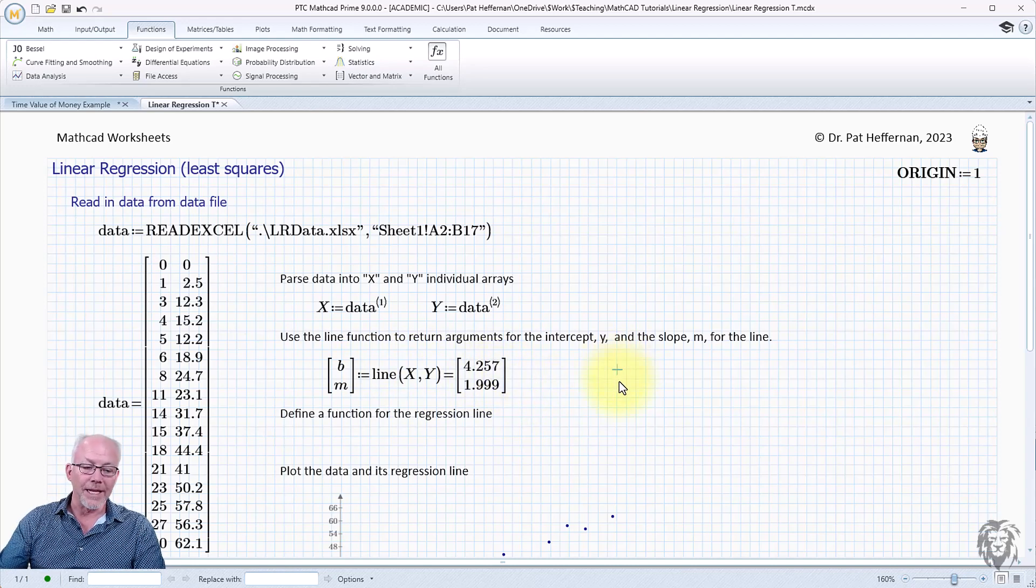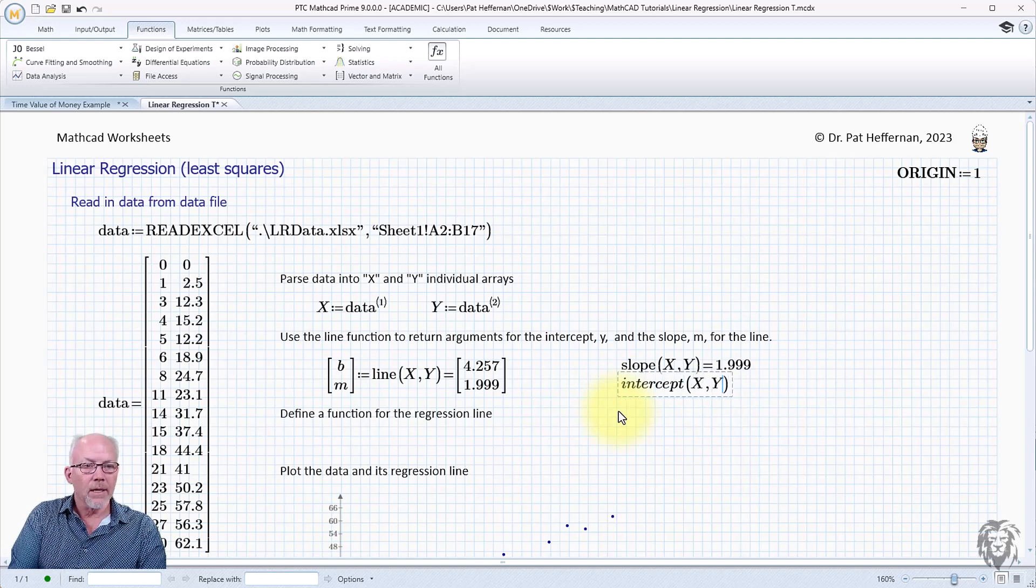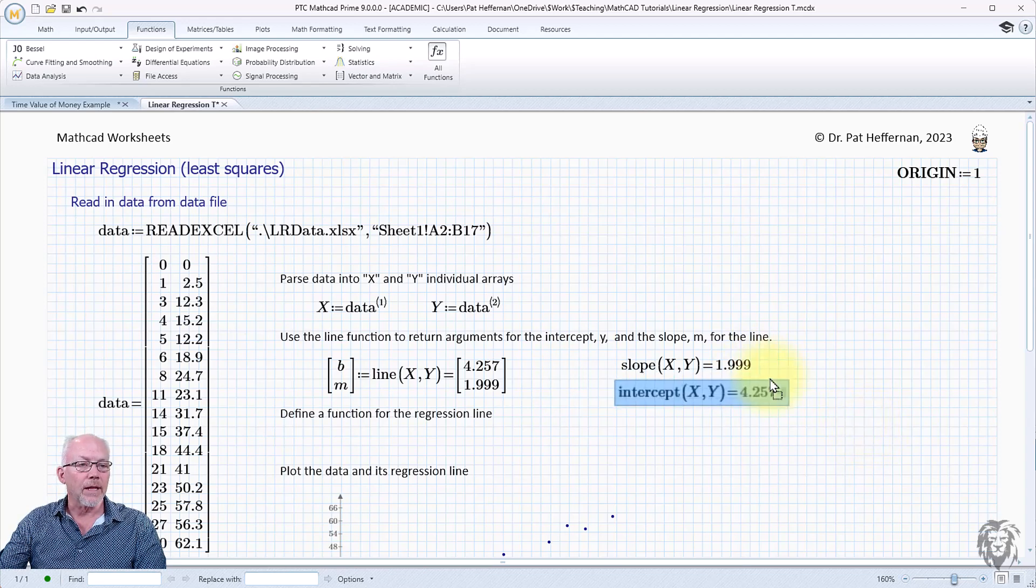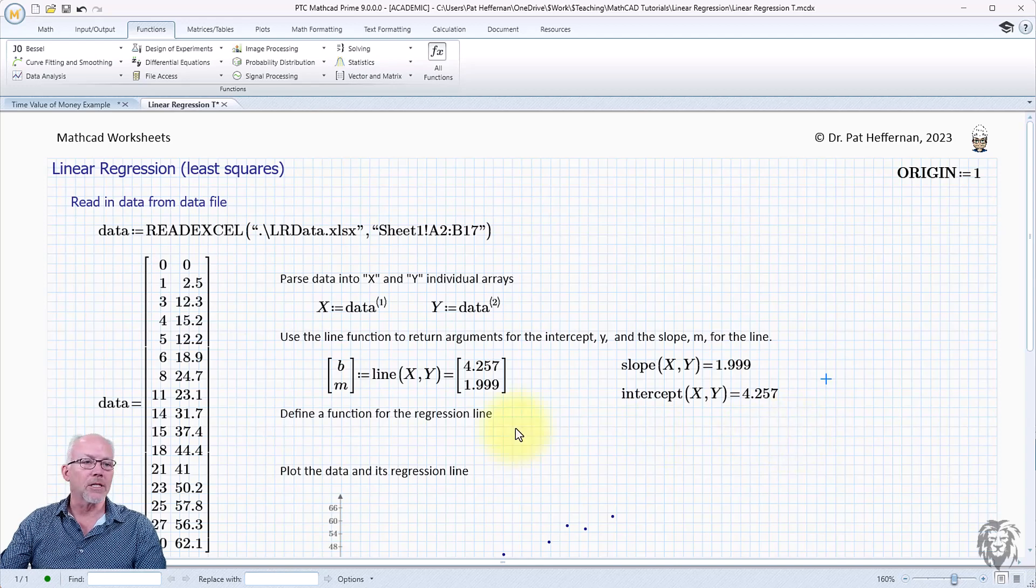You can also do them individually if you so choose. So slope x, y, set that equals, and you see we get the 1.99 out, or we could do intercept. Again x, y, hit equals, and we can get those two values in that form as well. So a couple different ways you can do it. This is nice and compact and easy to go.